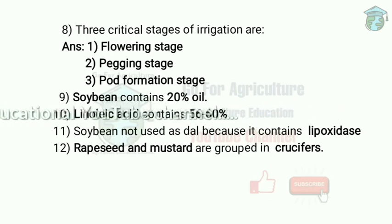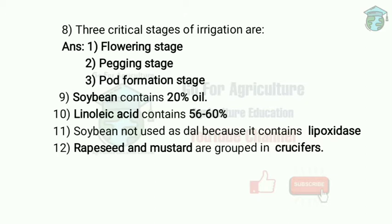Pod formation is one of the important stages. In groundnut also, pod formation is important because it is an oilseed crop. Flowering stage is 35–40 days after sowing, pegging is 55 days after sowing, and pod formation is 65–70 days after sowing. At pod development the field should be well-drained.